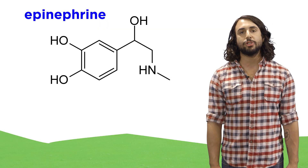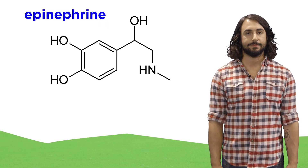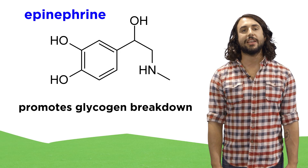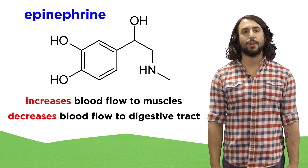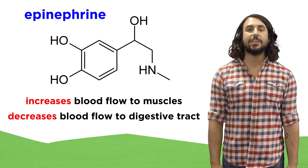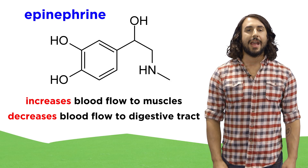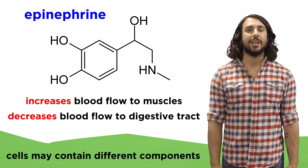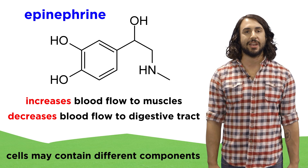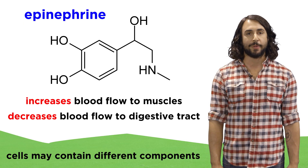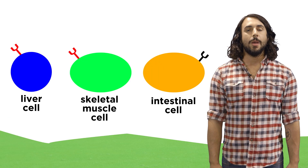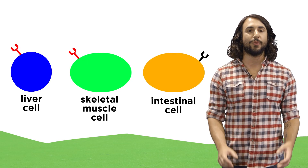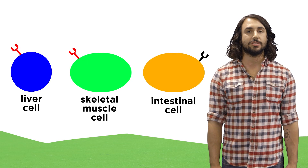Some hormones elicit multiple responses simultaneously. Looking at epinephrine again — not only will this promote glycogen breakdown, but it also increases blood flow to skeletal muscles and decreases blood flow to the digestive tract. How can it do all these things at once? It's partially because different cells might contain different enzymes than others and therefore elicit a different cellular response to the same hormone. But also some hormones are able to activate several completely different receptors, each with their own unique response to binding.